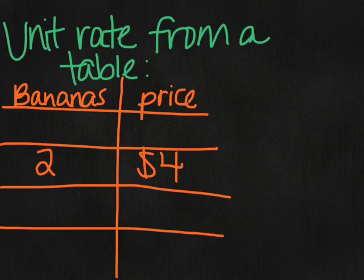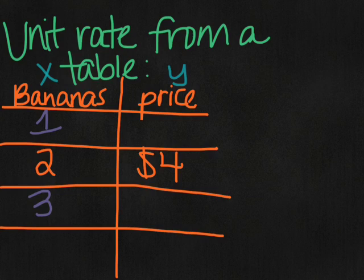We can look at unit rates in a table just like we can look at unit rates in a graph. I made a table where my x value is bananas and my y value is price. And I put the information that we had. We had two bananas for four dollars. And we need to add the rest of the information here. I'm going to see how much does it cost for one banana, how much does it cost for three bananas, and how much does it cost for four bananas.